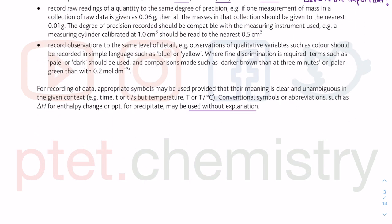You can use conventional symbols or abbreviations because you are in Paper 3 practicals. You are not allowed to use abbreviations in a theory paper. So you can use delta H for enthalpy change, and PPT for precipitate. Those are stated in the syllabus for the 2022 syllabus onwards — they have always been stated in the syllabus document.